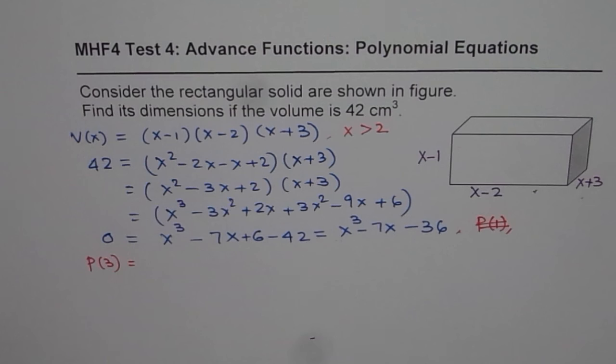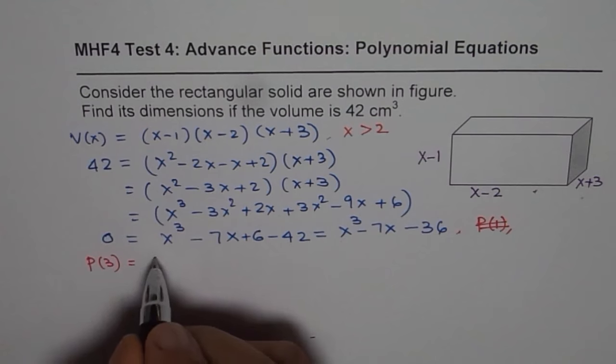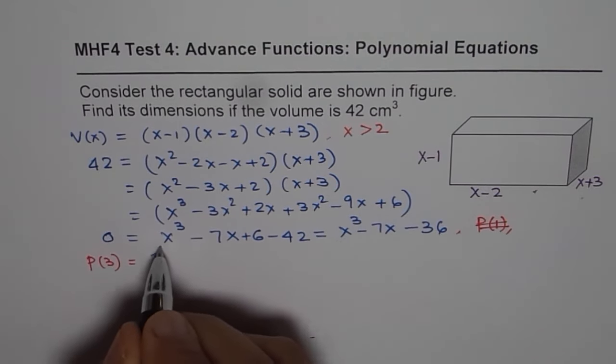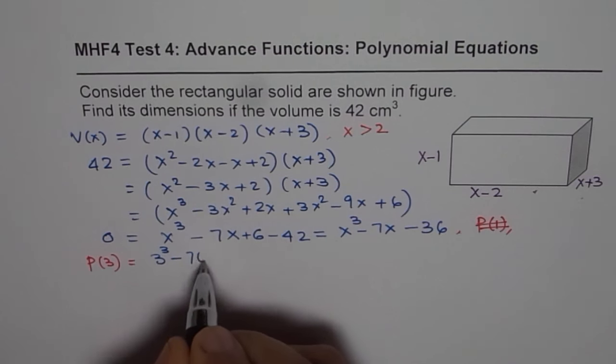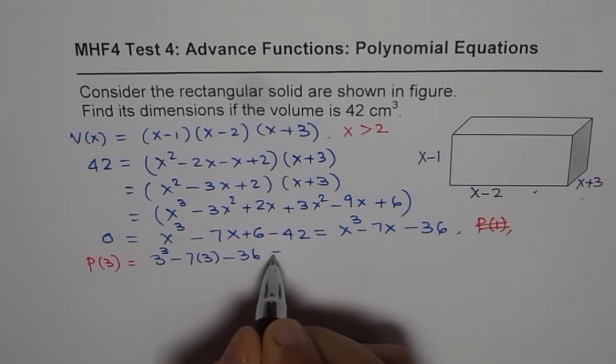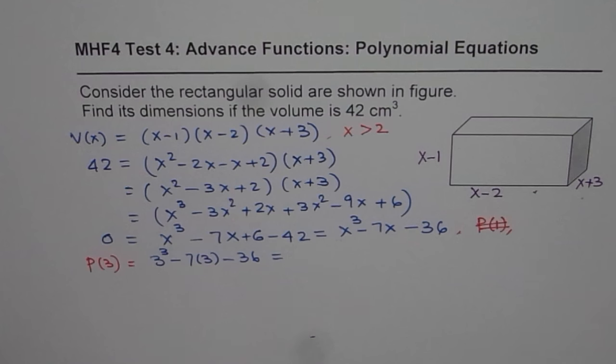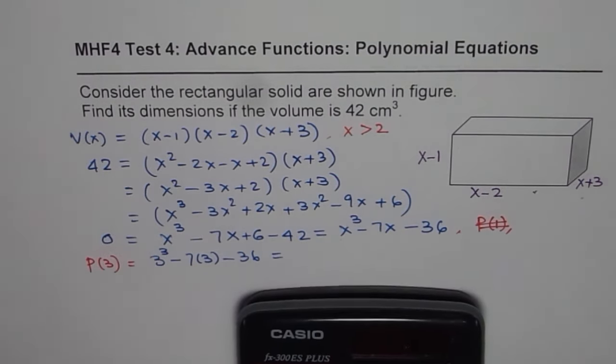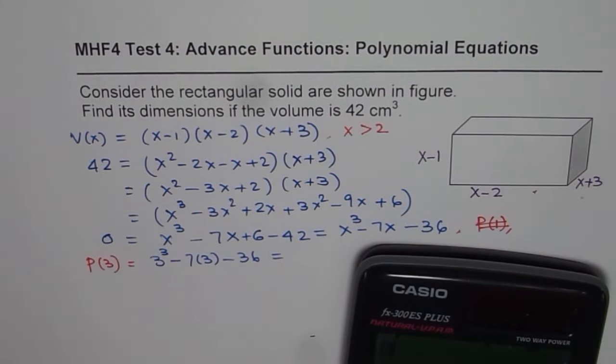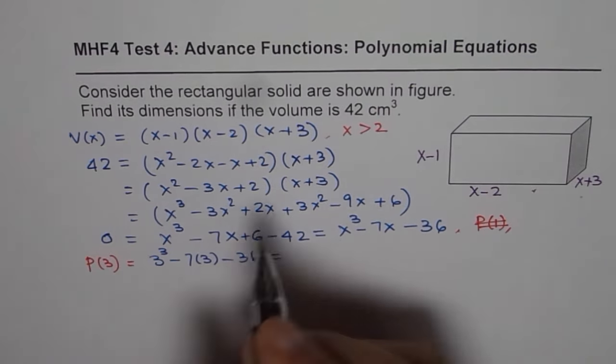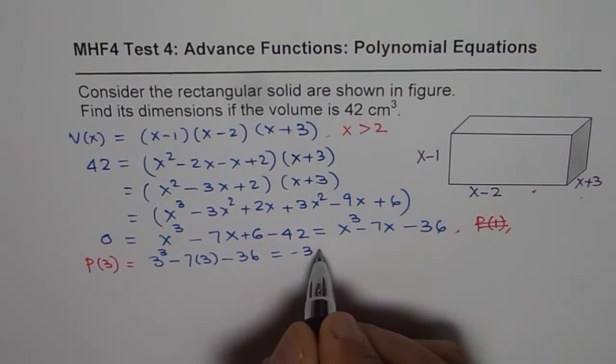So we can try, use your calculator and try the value. What is the value of the function when x is 3? It will be 3³ minus 7 times 3 minus 36. You can use your calculator and find the answer. So what do we get? 3³ is 27, but don't rely on your basic calculations. Use calculator. 27 minus 7 times 3 minus 36 is equal to minus 30. So it is not 0. So that doesn't help us.